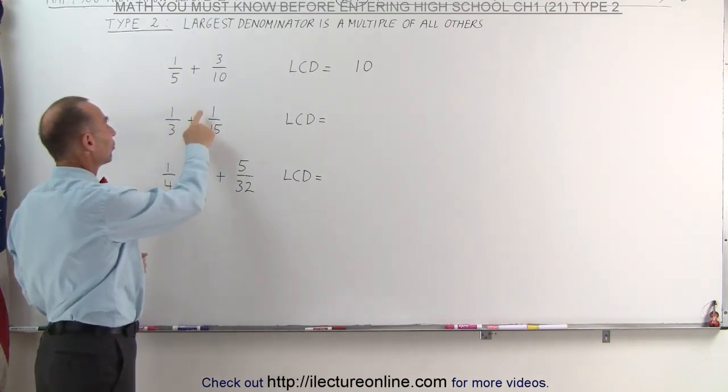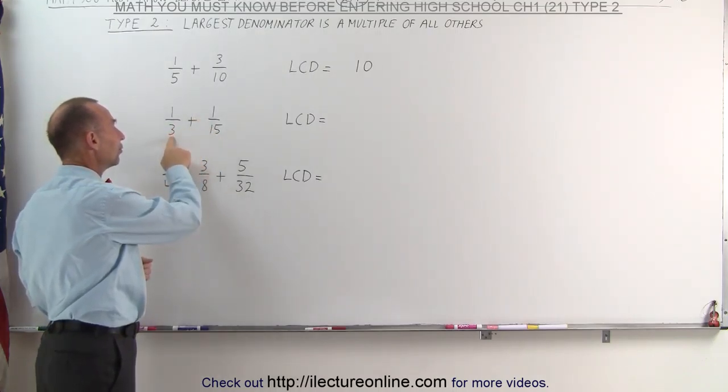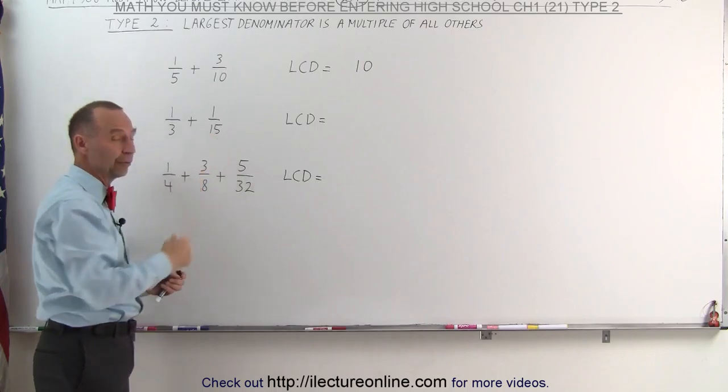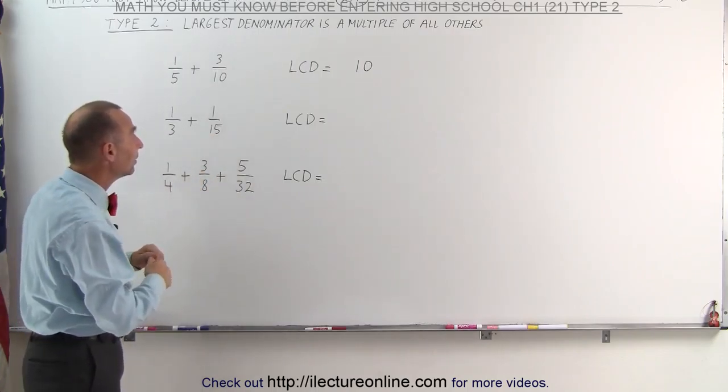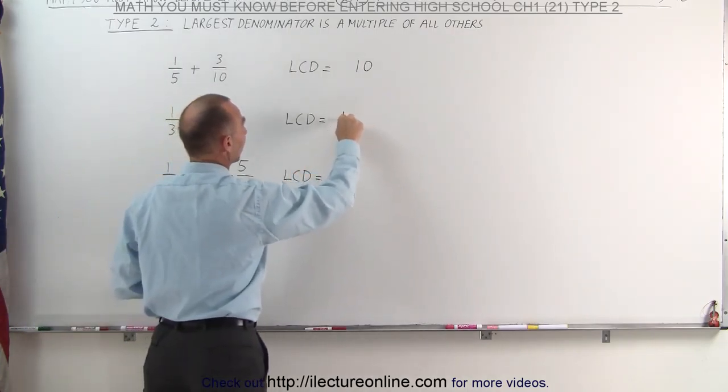Here again, you can see that 1/3 + 1/15, 3 goes evenly into 15. 15, therefore, is a multiple of the other denominators. The LCD simply becomes 15.